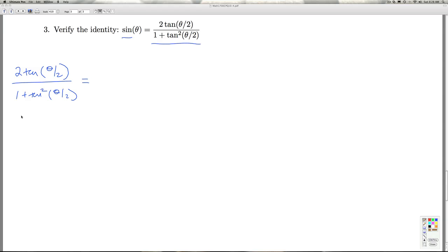1 plus tangent squared of an angle should ring a bell. We know from the Pythagorean identity that 1 plus tangent squared of any angle is secant squared of that angle.